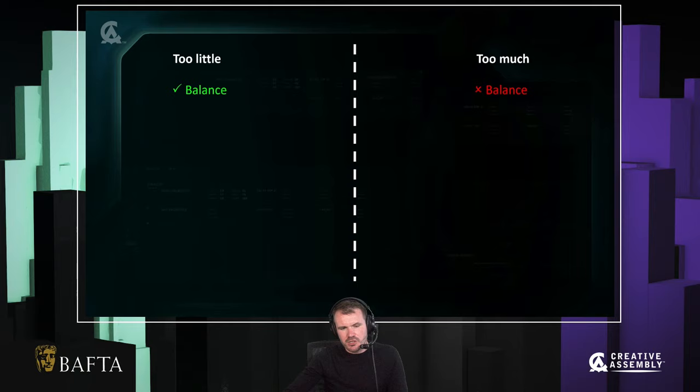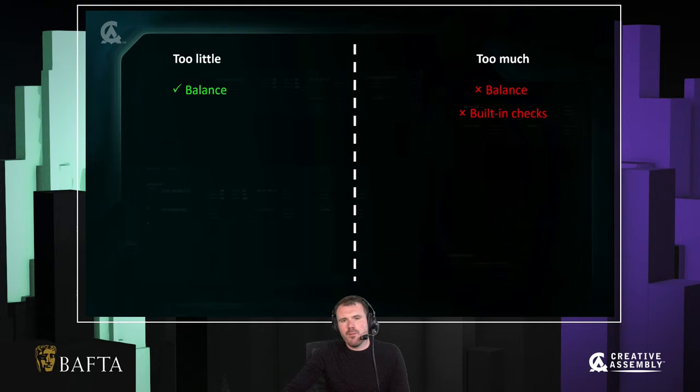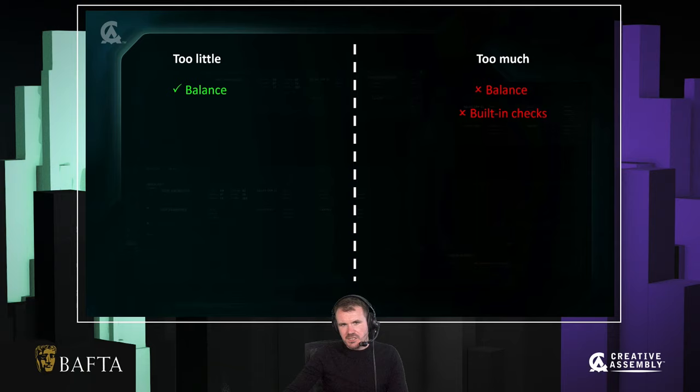Let me break down a list of properties and risks and sort them into whether they occur with too little or too much asymmetry. Balance: it's pretty uncontroversial to say that a more asymmetrical game is harder to balance — that's universally true. Equally, with a more asymmetric game, you need more built-in checks. For example, in a real-time strategy game with several factions where some have air units and some don't, everyone still needs an anti-air unit. More asymmetry means more built-in redundancies in your system.